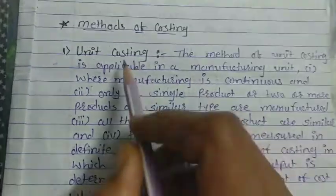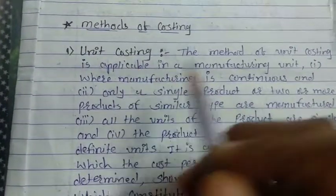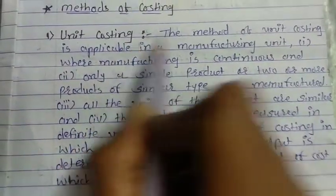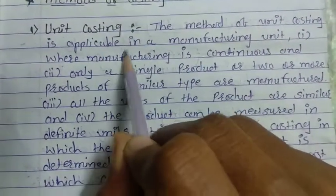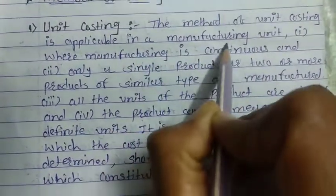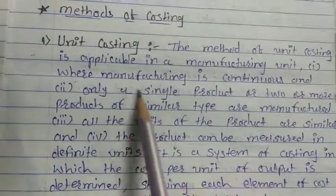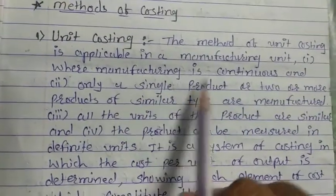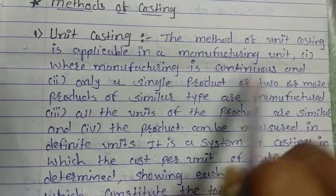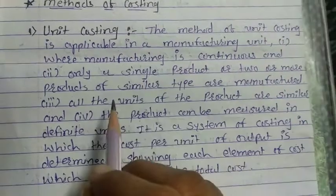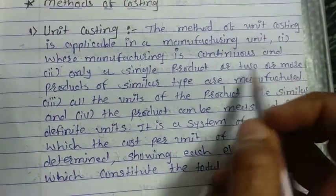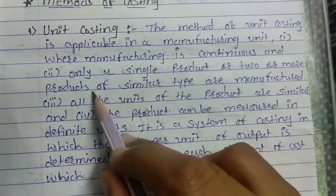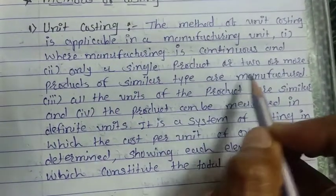The first method is unit costing. The method of unit costing is applicable in a manufacturing unit where manufacturing is continuous and only a single product or two or more products of similar types are manufactured.